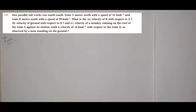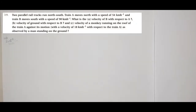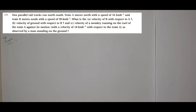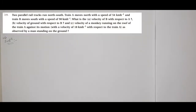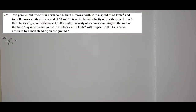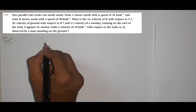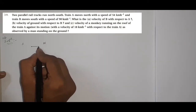Hello students, next example — example number 3.9. The question: two parallel rail tracks run north-south in opposite directions. Train A moves north with speed 54 km/h and train B moves south with speed 90 km/h. Here we consider north and south directions for the two trains.